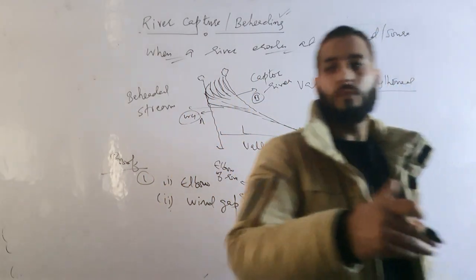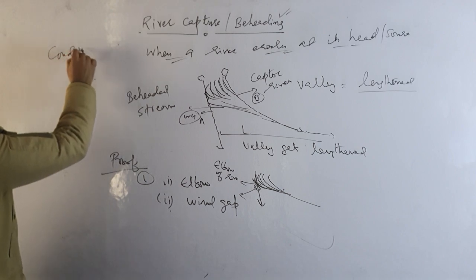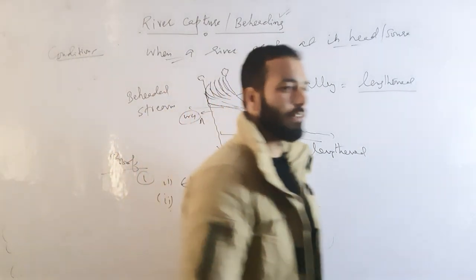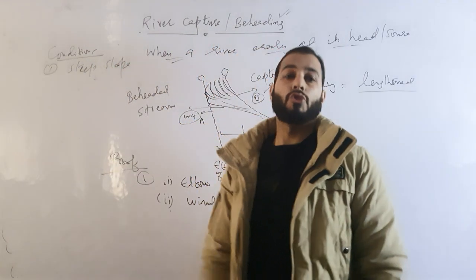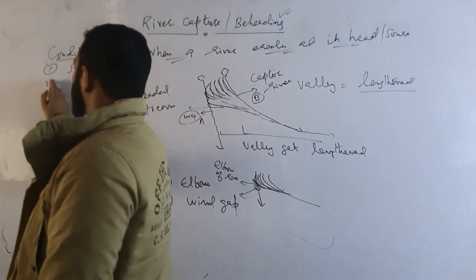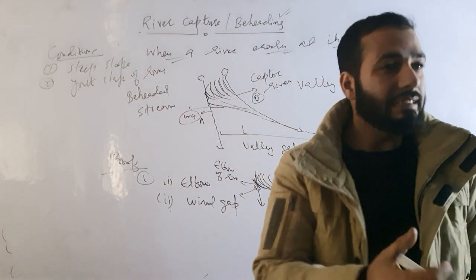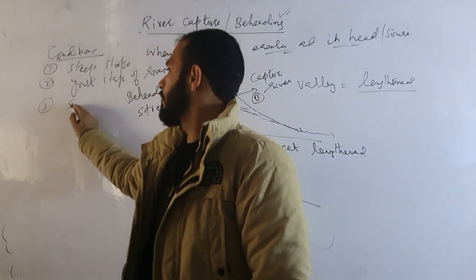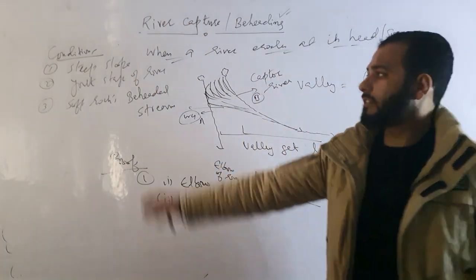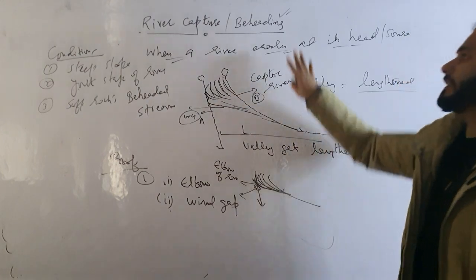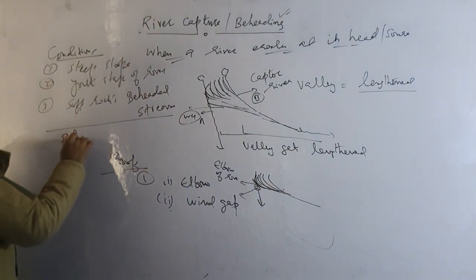What are the necessary conditions for the development of river beheading or river capture? Number one, you should have a steep slope. Number two, you should have the youth stage of the river. Number three, you should have soft rocks. These three are the ideal conditions which help in the formation of river capture or river beheading.